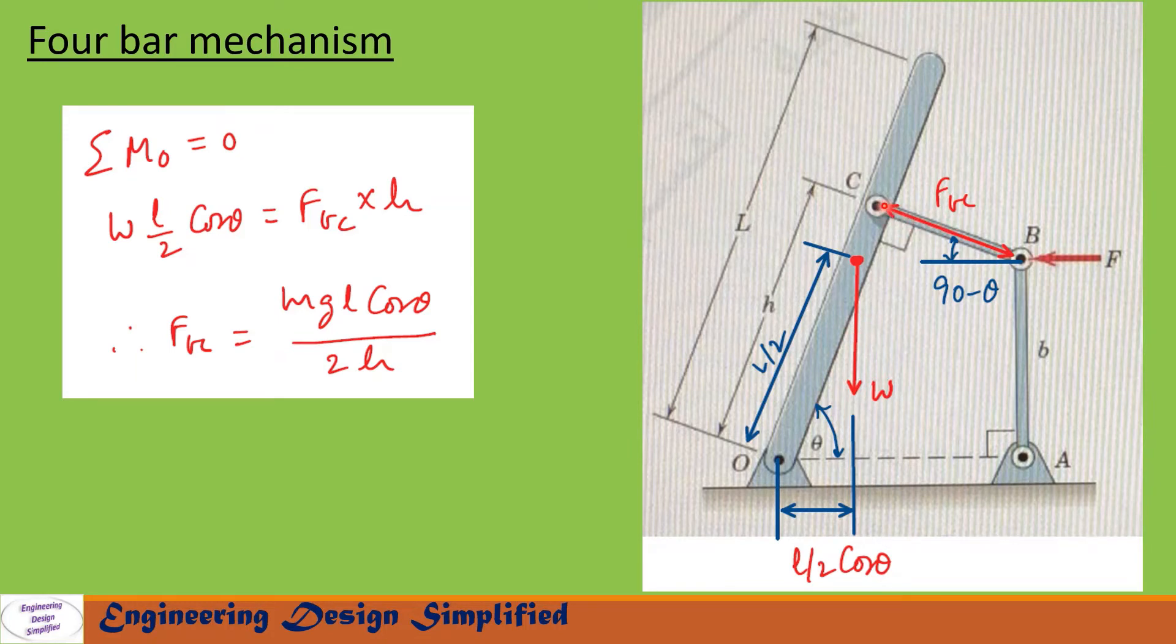On this uniform bar there is weight acting from the center vertically downwards and a reaction FBC acting perpendicular to the bar at length h from O. Now let us take moments about O for this uniform bar. The moment due to weight W can be written as W times L by 2 cos theta, since this angle is theta. This is opposed by reaction FBC at this point. The moment due to FBC about O is FBC times h. So W times L by 2 cos theta equals FBC times h. From this we can write FBC equals mgl cos theta by 2h, where W equals m times g.